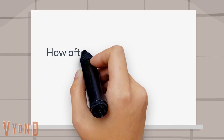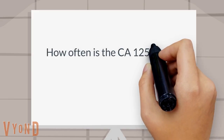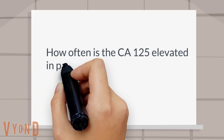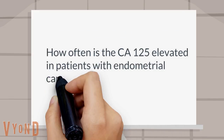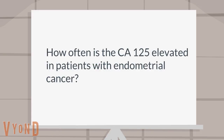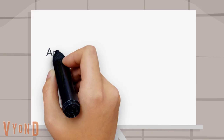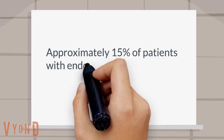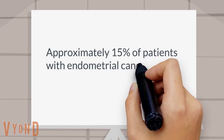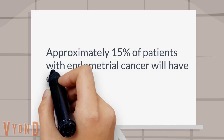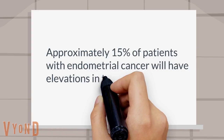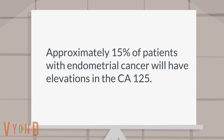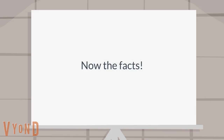How often is the CA125 elevated in patients with endometrial cancer? Approximately 15% of patients with endometrial cancer will have elevations in the CA125. Now the facts.